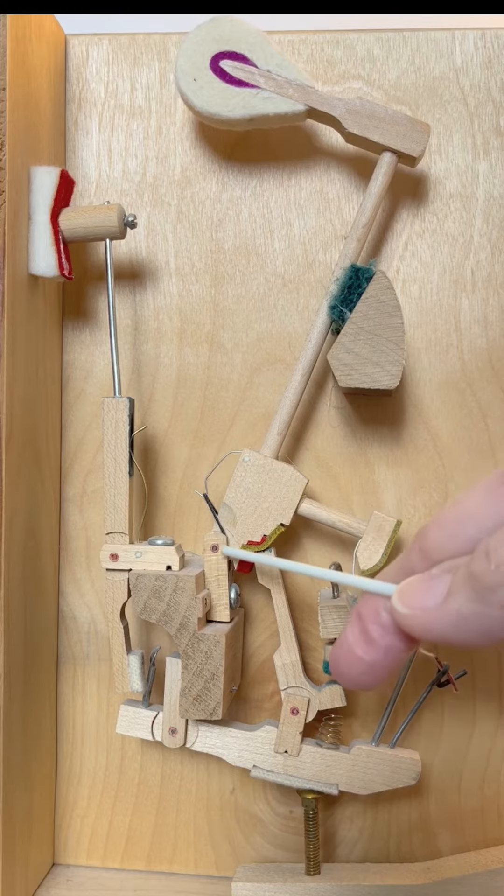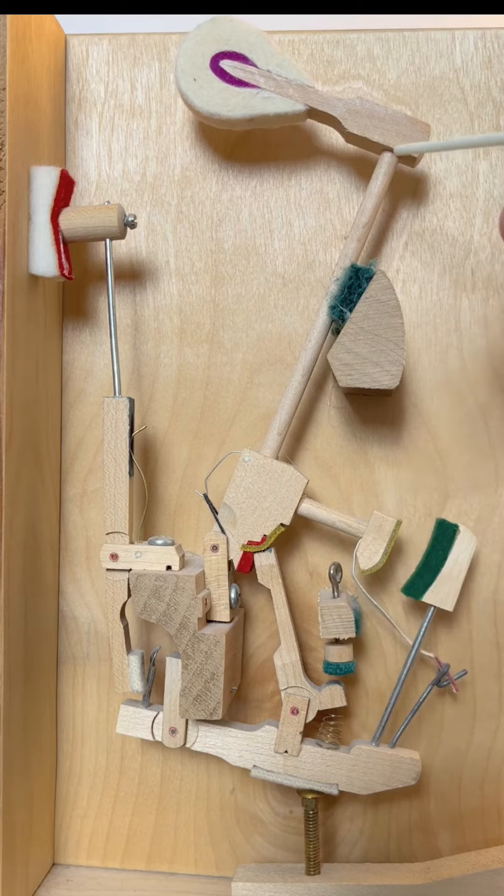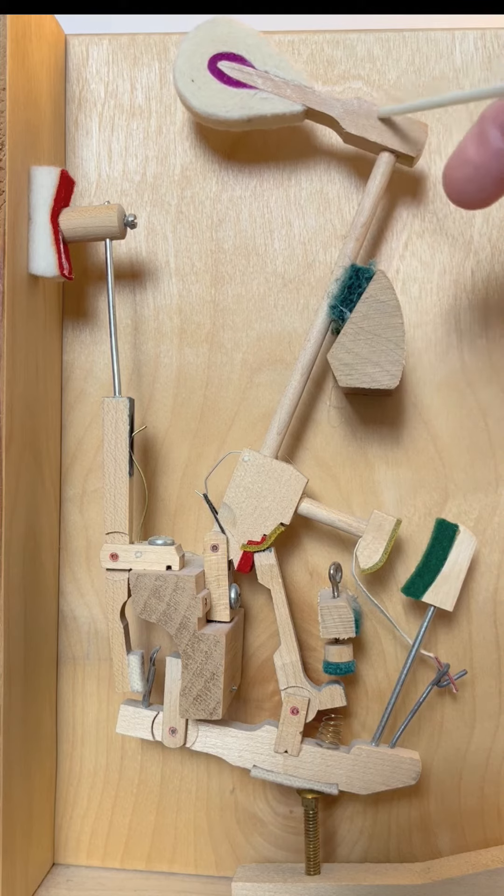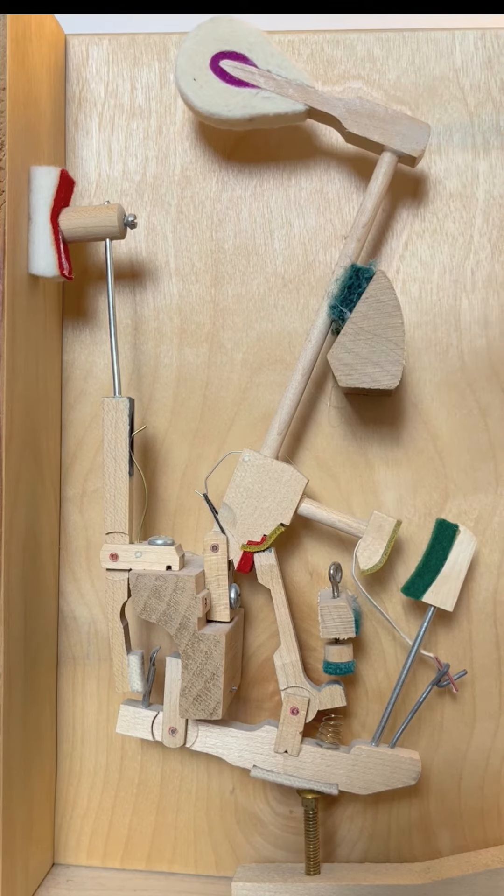This is the hammer butt. This is the hammer butt flange. This is the hammer shank. This is the hammer head. This right here is the back catch.